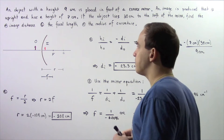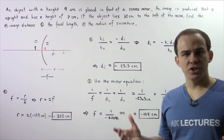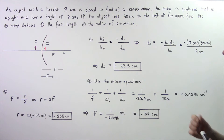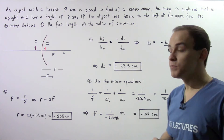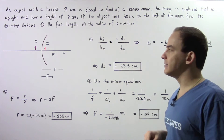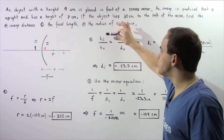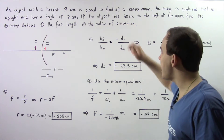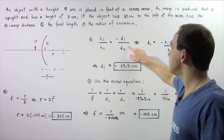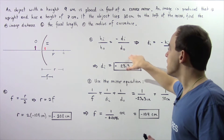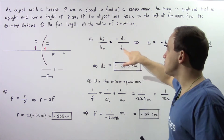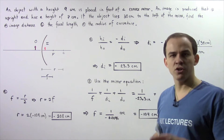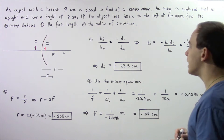Let's begin with Part A — calculating the image distance. To do this, we use the magnification equation. Recall that the lateral magnification M equals HI (image height) divided by HO (object height), and that equals the negative of the image distance DI divided by the object distance DO. We can rearrange this equation, bringing known values to one side and the unknown to the other.